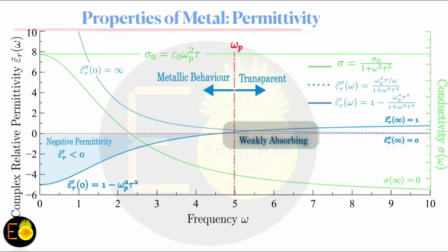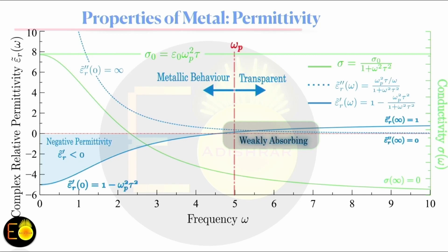For frequency greater than omega_p, the permittivity becomes positive and the metal appears like an ordinary dielectric medium to the incident wave. At very high frequency, the real part of the permittivity approaches one — the metal appears like vacuum. The imaginary part of the permittivity goes to infinity at very low frequency; near the plasma frequency it becomes significant and the metal becomes lossy. Above the plasma frequency the metal appears weakly absorbing or transparent to the incident wave.